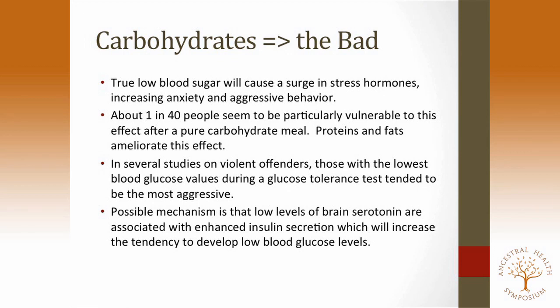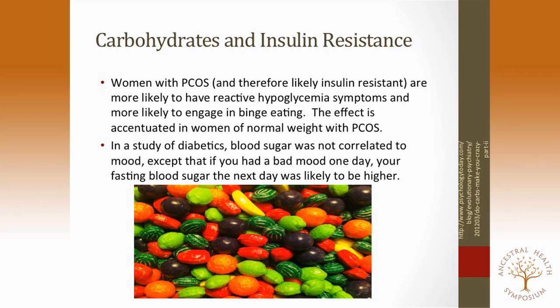A possible mechanism: low levels of brain serotonin are associated with enhanced insulin secretion, which increases the tendency to develop low blood glucose. Women with PCOS tend to have bigger blood sugar swings and reactive hypoglycemia — feeling really nasty and shaky 90 minutes after a high-carb meal — and are more likely to engage in binge eating. Women with PCOS aren't necessarily insulin resistant, but often are. In normal-weight women with PCOS, without the compensation that obesity provides, there tend to be more wild blood sugar fluctuations.